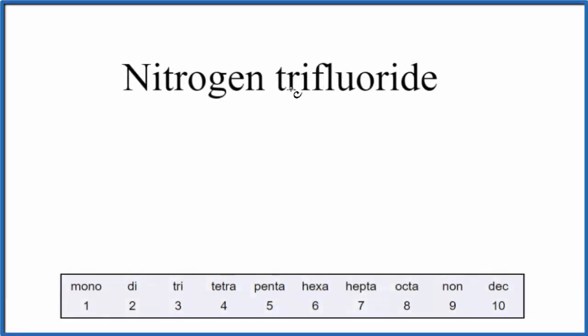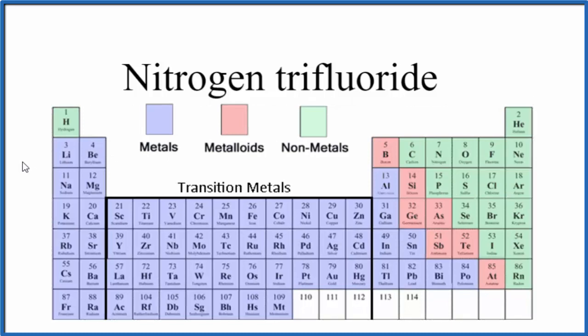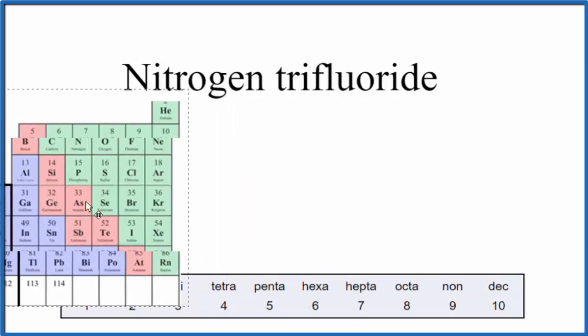To write the formula for nitrogen trifluoride, first we need to figure out what type of compound we have. If we look at the periodic table, we can see that both nitrogen and fluorine are nonmetals, and because they're nonmetals, this is a molecular compound. We don't need to worry about ionic charge.